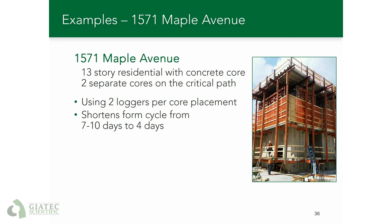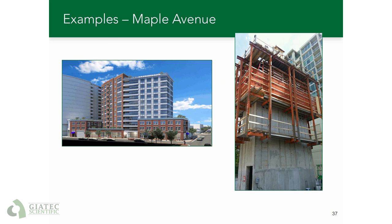1571 Maple Ave was another project where maturity was used for form jumping. It is a 13-story residential building with a couple of concrete cores. Two loggers were placed in every core placement. This helped shorten the critical path by allowing forms to be jumped every four days or so, which again was a huge time saver.